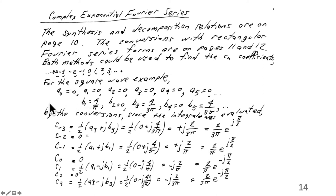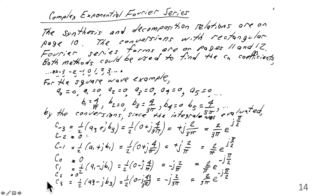For the square wave example, by the conversion formulas, we can find the complex coefficients. We have already evaluated the integrals — for example, the integral for b1 in the previous lecture. So the coefficients for the complex exponential Fourier series can be found just from those conversion formulas.